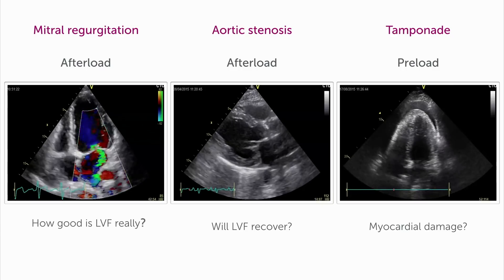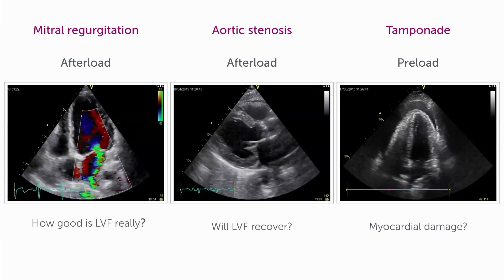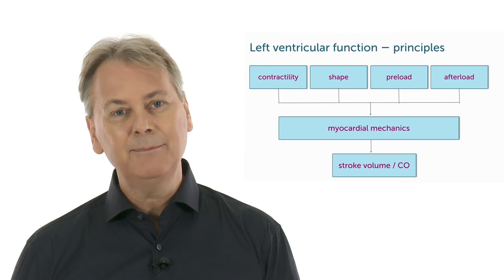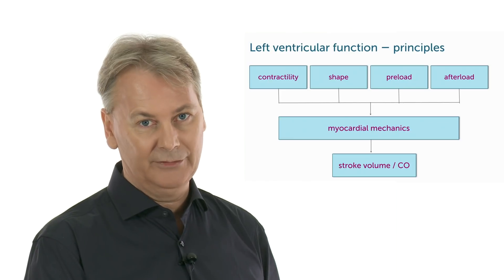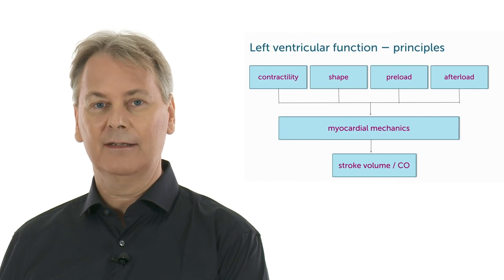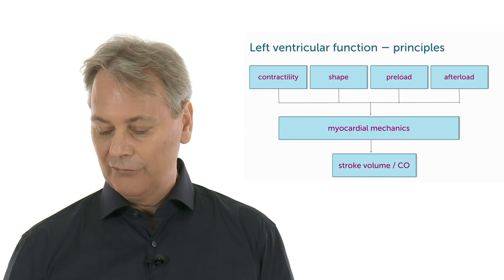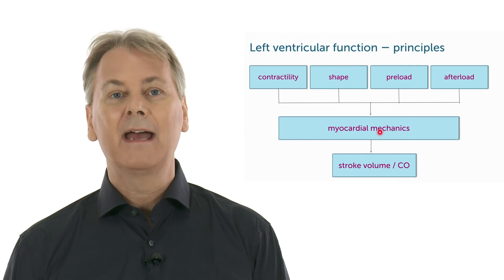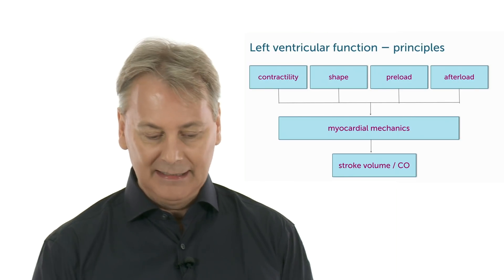These are just three of many hemodynamic situations where you have to consider all the factors discussed. At the end of the day, the heart has to generate a certain stroke volume or cardiac output adapted to the patient's needs at that moment — different at rest versus during exercise, and under various pathological conditions. It does this by altering these hemodynamic factors and by the way the heart muscle pumps. We'll be talking more about myocardial mechanics a little bit later.